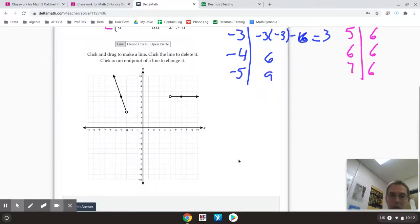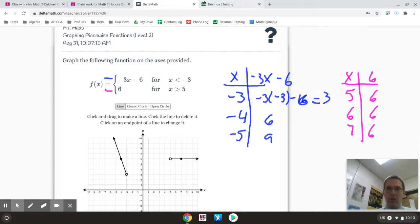Now I will warn you, Delta Math will be picky, and if you don't have your open and closed circles correct or if you don't make your line extend, it will not count this correct. But that should be a correct answer. Now I promised to show you Desmos as well.